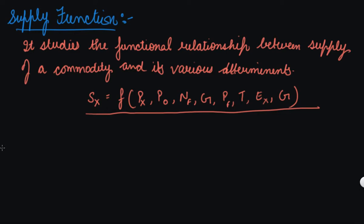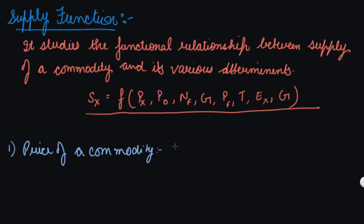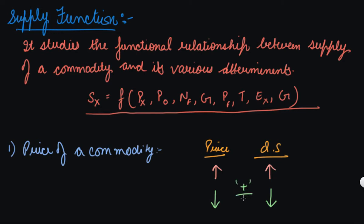The first determinant is the price of the commodity. There is a direct relationship between the price of a commodity and its quantity supplied. Generally, higher the price, higher the quantity supplied, and lower the price, lower the quantity supplied. So there is a positive relationship between price and quantity supplied.